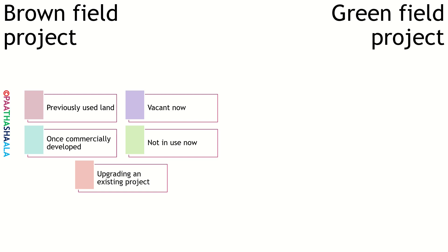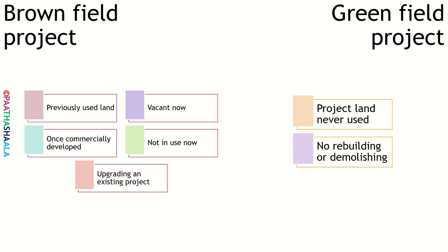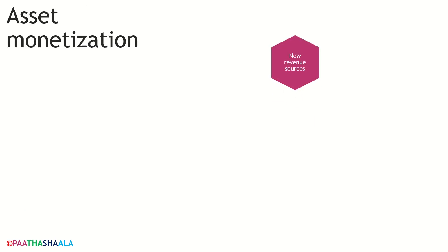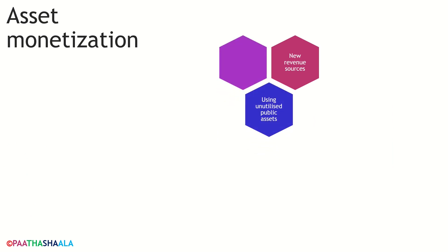What is a greenfield project? A greenfield project is where the land on which the project is developed has never been used and there is no need to rebuild or demolish an existing structure. What is asset monetization? Asset monetization involves the creation of new revenue resources by making use of unutilized or underutilized public assets by involving the private sector through leasing or selling those assets to create better value.